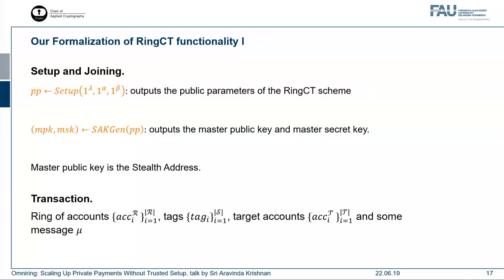Let me jump into the formalization. Users first run a setup algorithm that generates public parameters for the ring CT scheme. They set up their stealth address by running a stealth address key generation algorithm that outputs a master public key and master secret key — done one time. A transaction in our formalization is a ring of accounts, the tags of the spending accounts, the target accounts, and some arbitrary message or metadata mu.